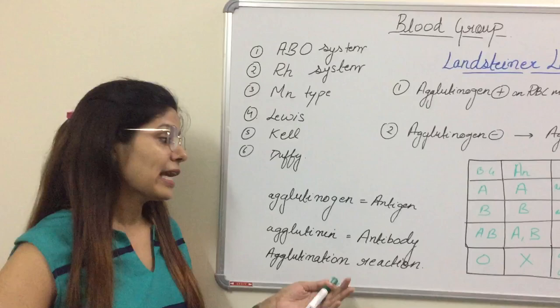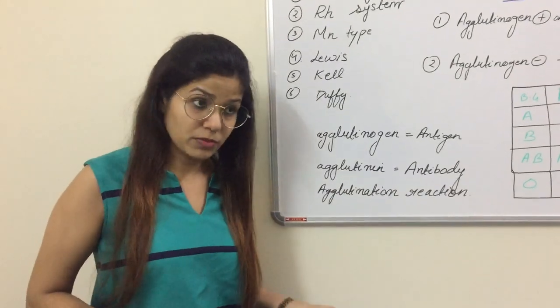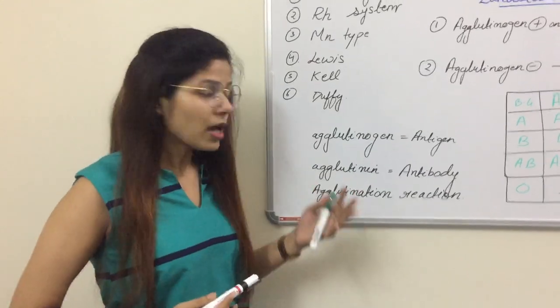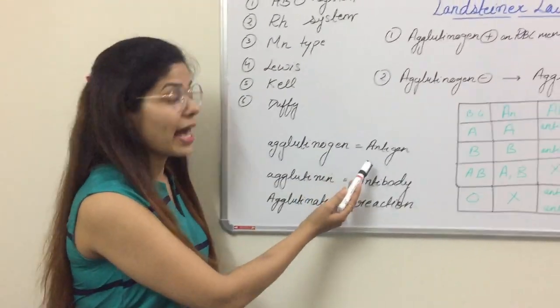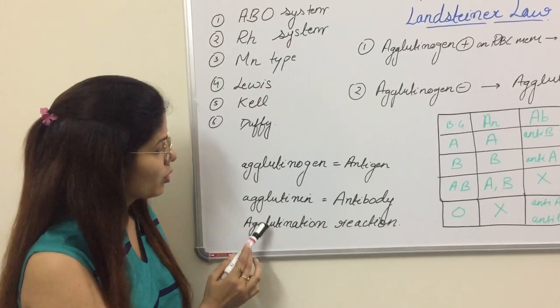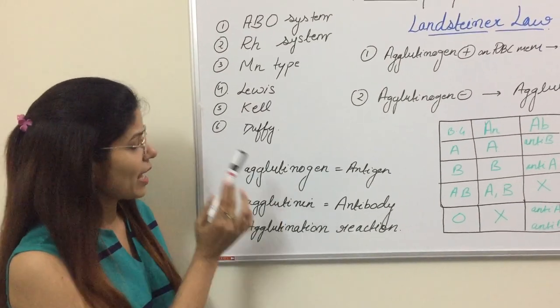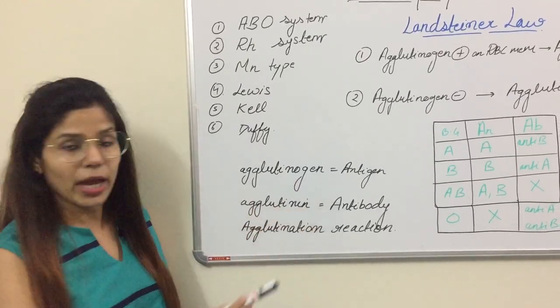There are different types of terminology which we are going to use while doing this blood group system. These terminologies are agglutinogen, which is antigen, and agglutinin, which is antibody, and agglutination reaction is the reaction between agglutinogen and agglutinin. That is antigen and antibody reaction.